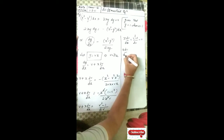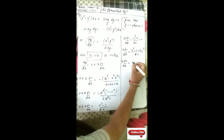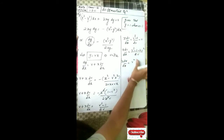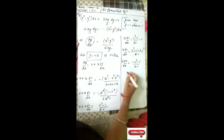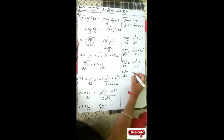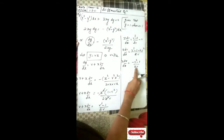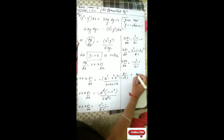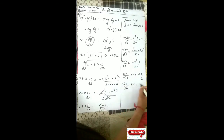Take the LCM: x dv/dx becomes (v² minus 2v²) upon 2v, which is minus(v² plus 1) upon 2v. Separating and rearranging, we get 2v upon minus(v² minus 1) dv equal to dx upon x, or minus 2v upon (v² plus 1) dv equal to dx upon x.